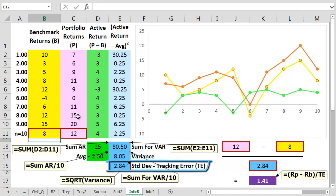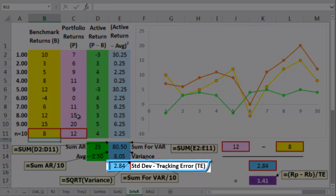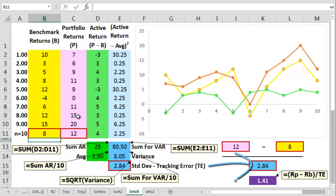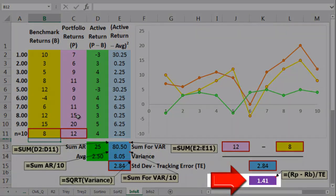Now we just square root this variance and now we have the standard deviation of the active returns or the tracking error. Now we can plug this into the information ratio. Using those final returns we take the benchmark away from the portfolio then divide by that tracking error. We now have an information ratio of 1.41.